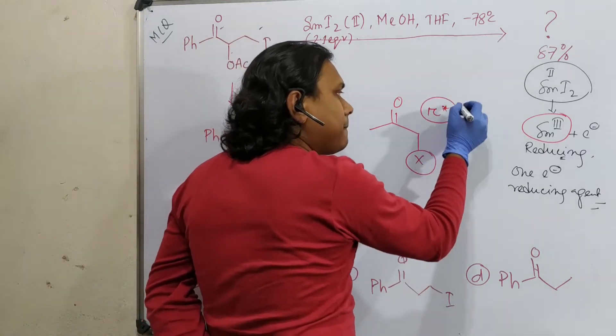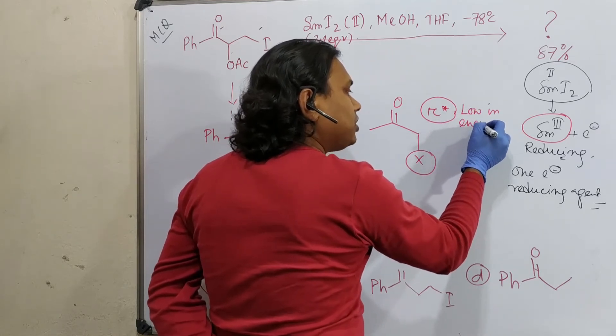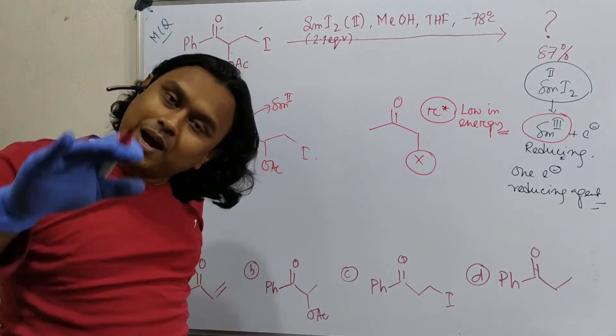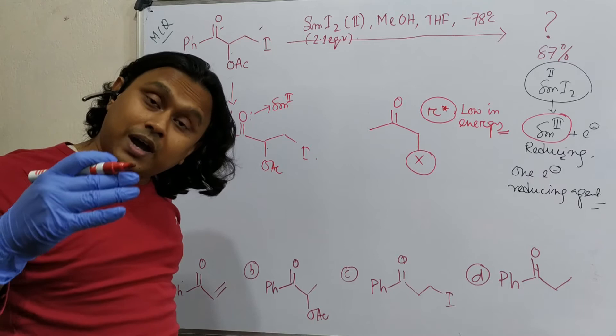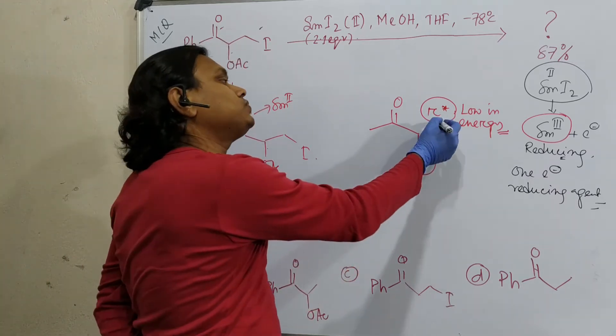And remember, pi stars are low in energy. Because sigma bond is very stable. So it's low in energy than pi. So that's why the sigma star, the antibonding, is far higher compared to the pi star.